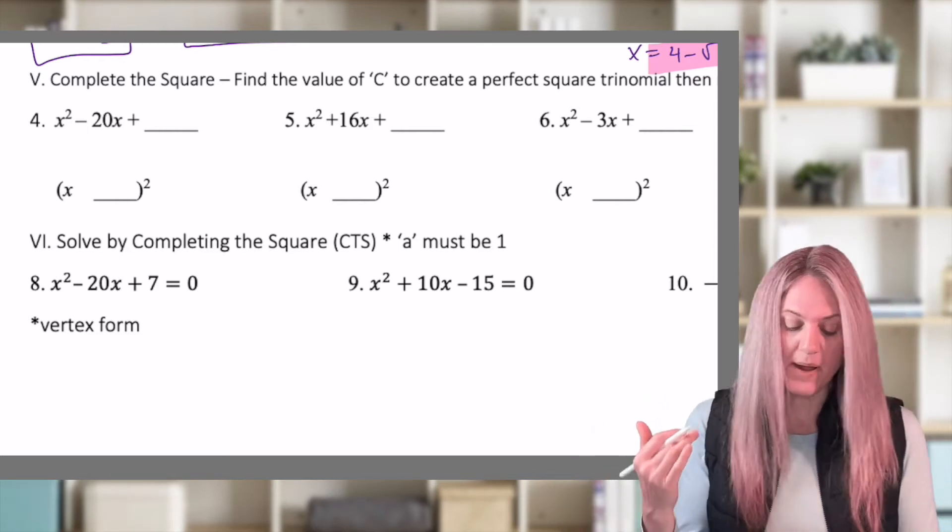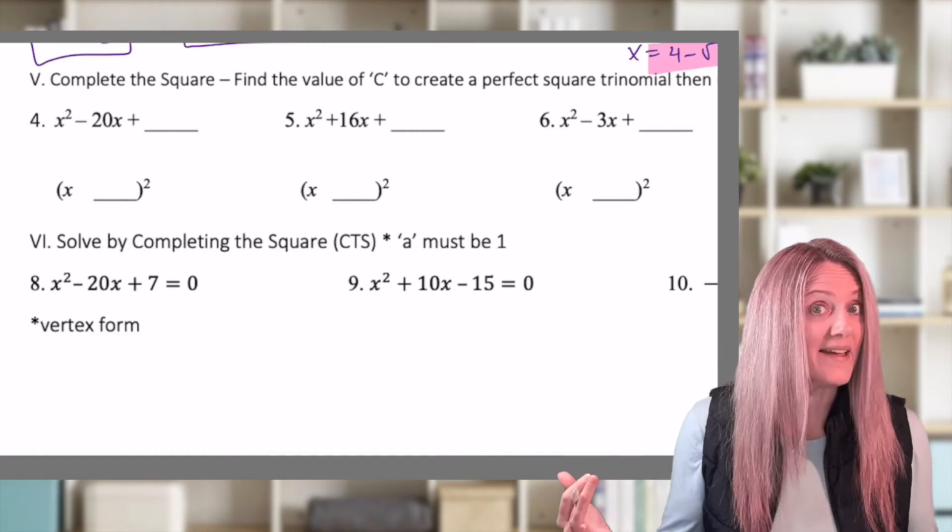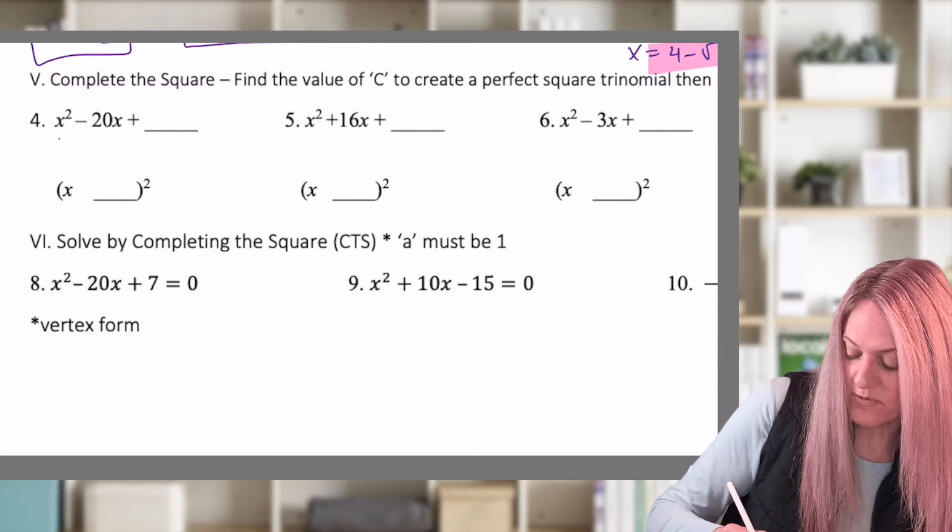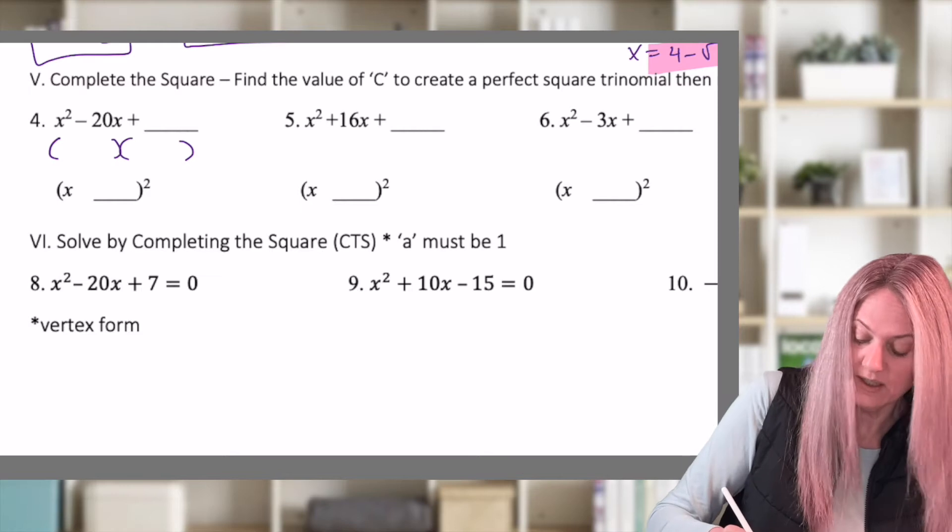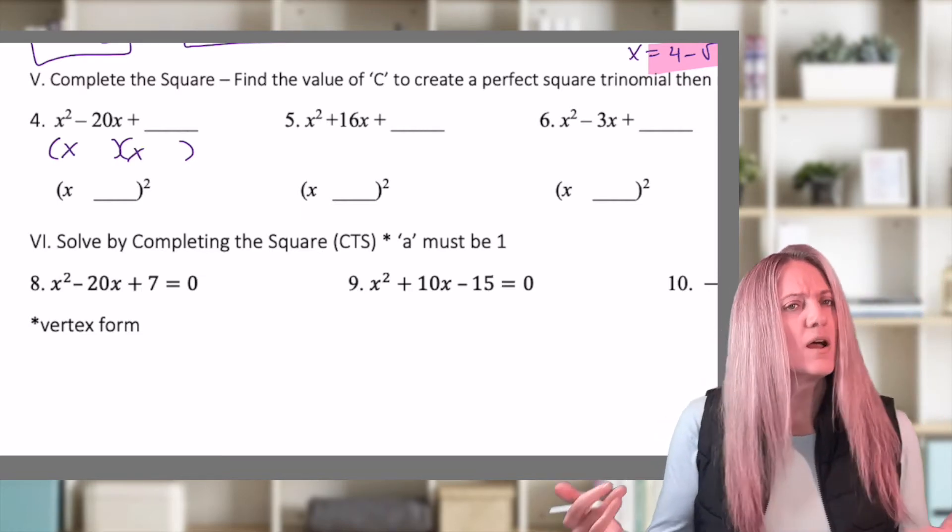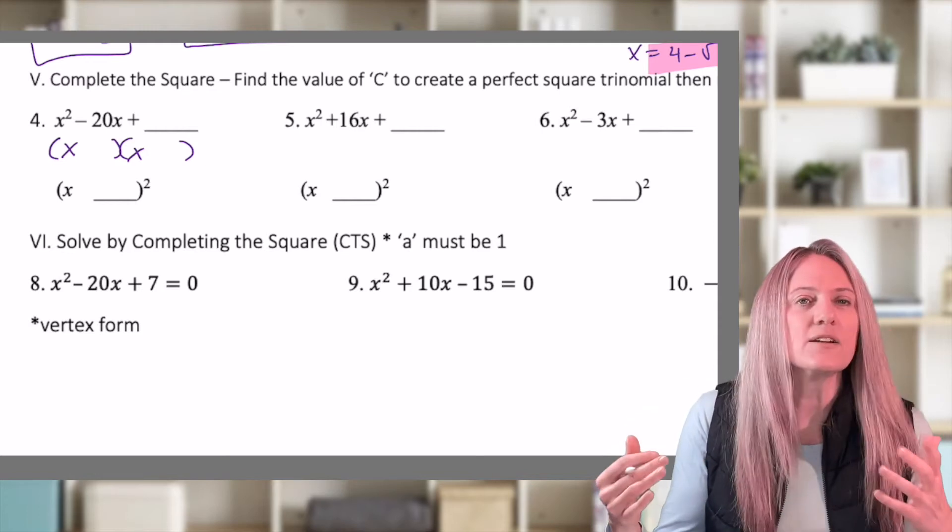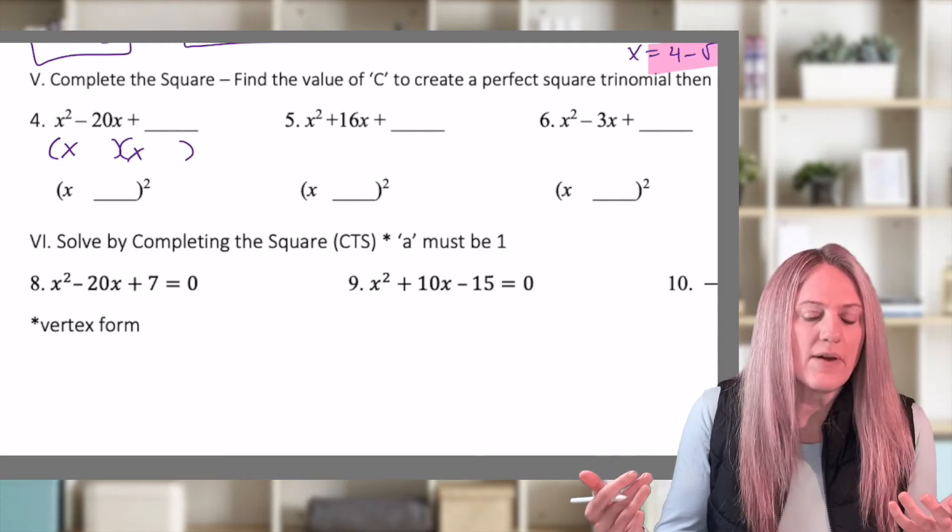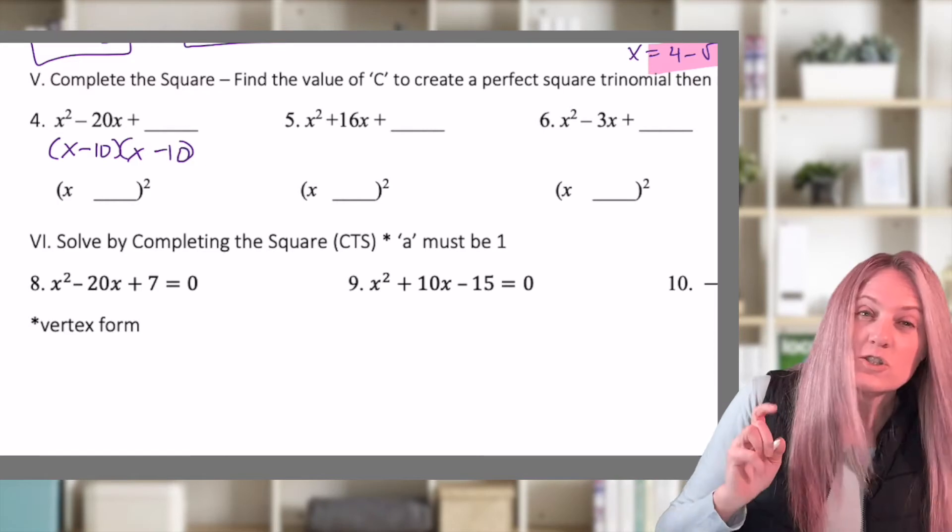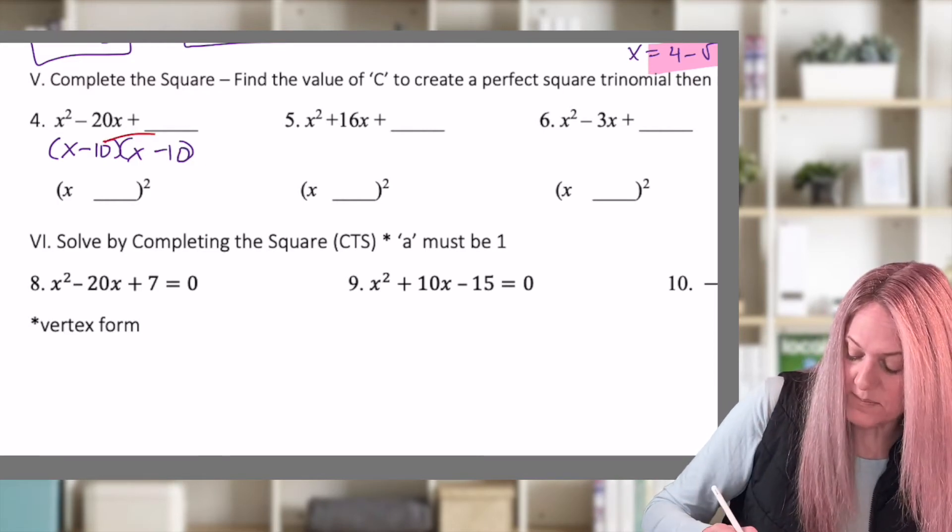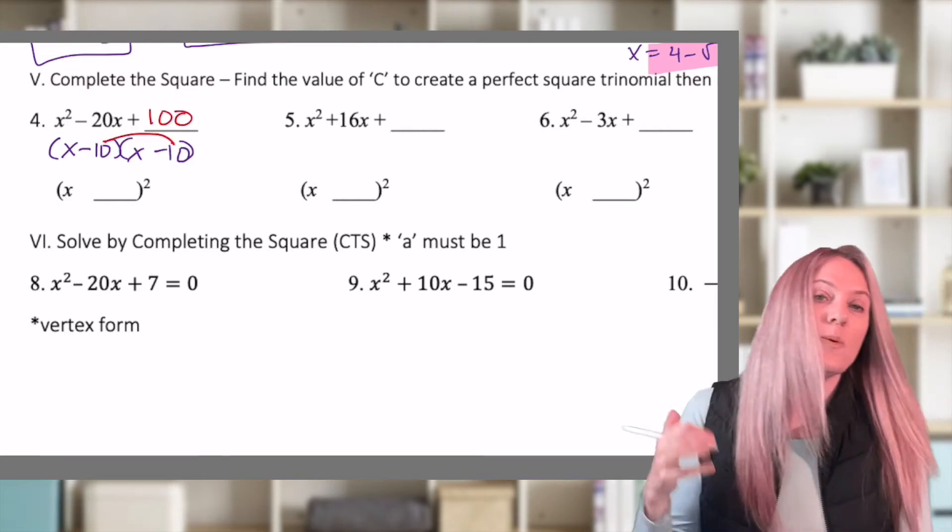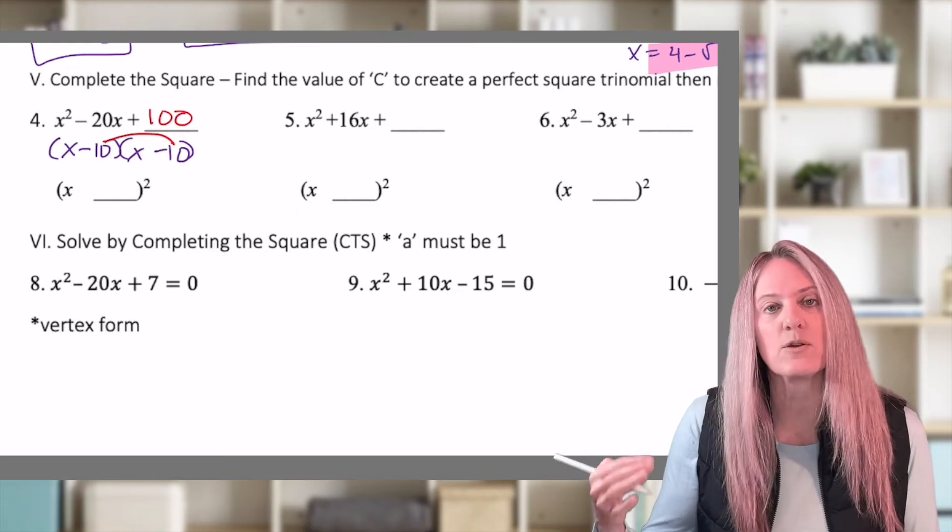We have x squared minus 20x plus what? Well, let's do what we did before. Binomial times binomial. We know it's going to be x times x to give me x squared. And then what do I put in there? Well, I need a number plus itself to give me negative 20. So, of course, negative 20 divided by 2. Oh, negative 10. Do a quick check now. Negative 10 times negative 10. That means we would need to add 100. Our c value is 100.